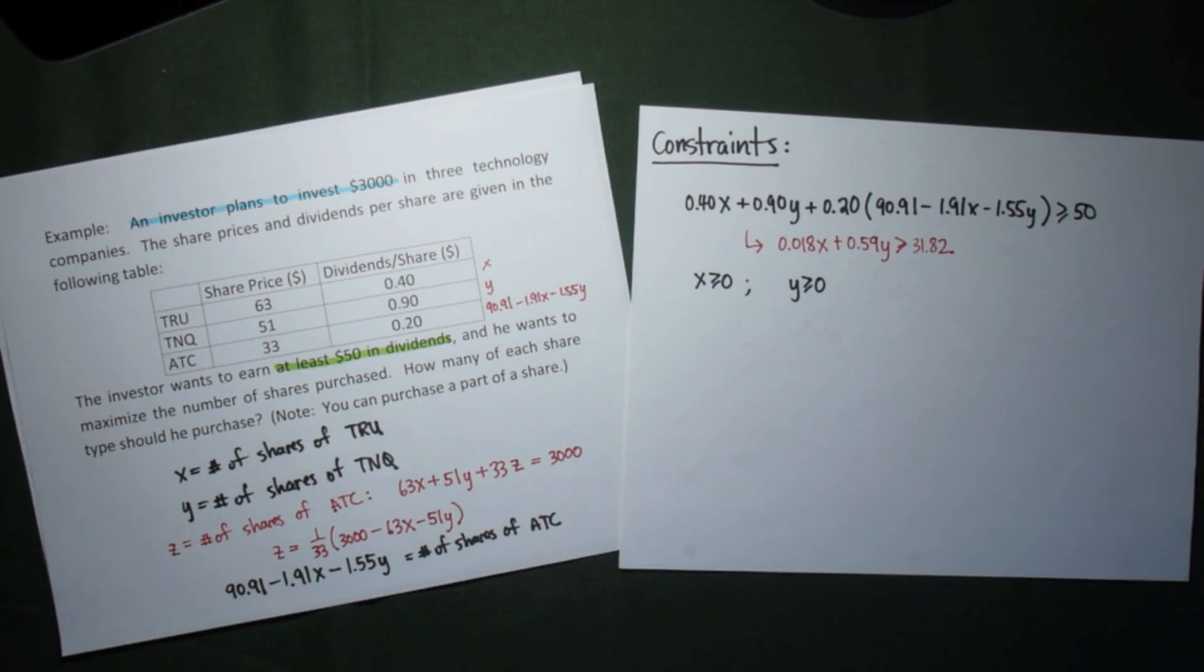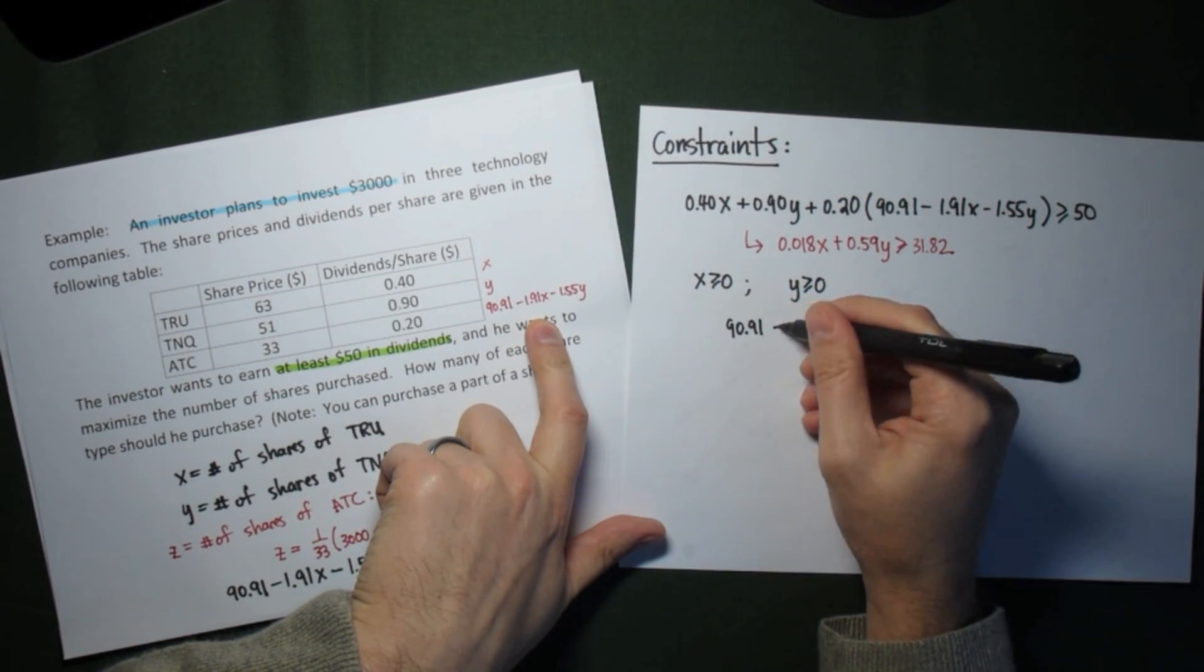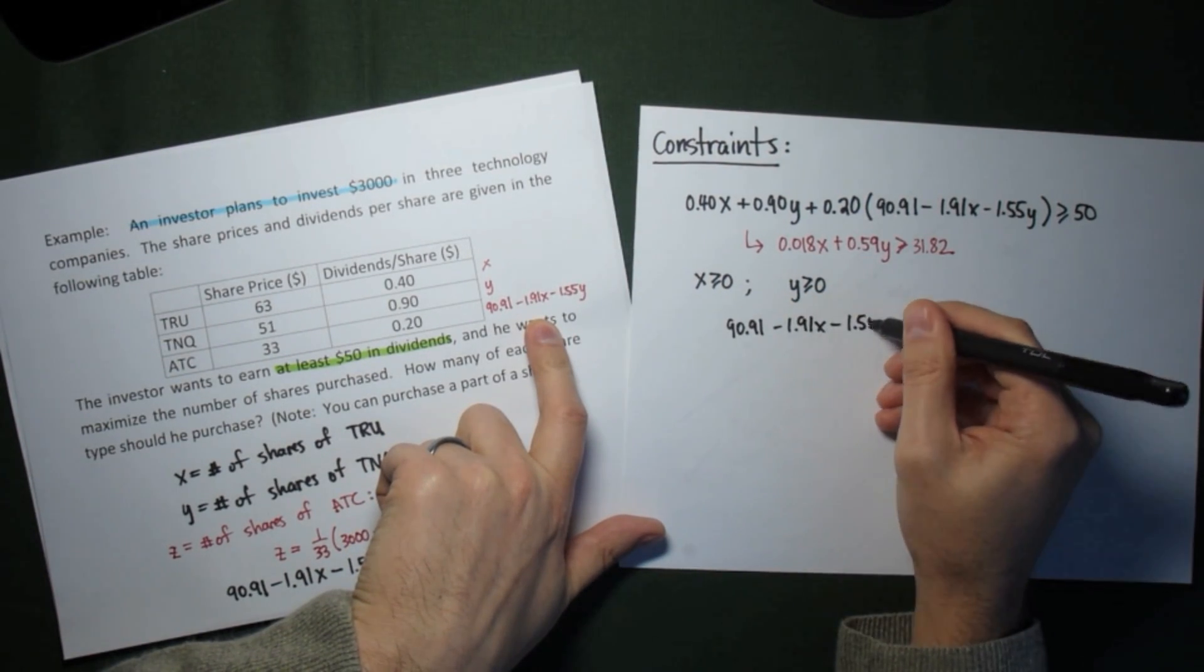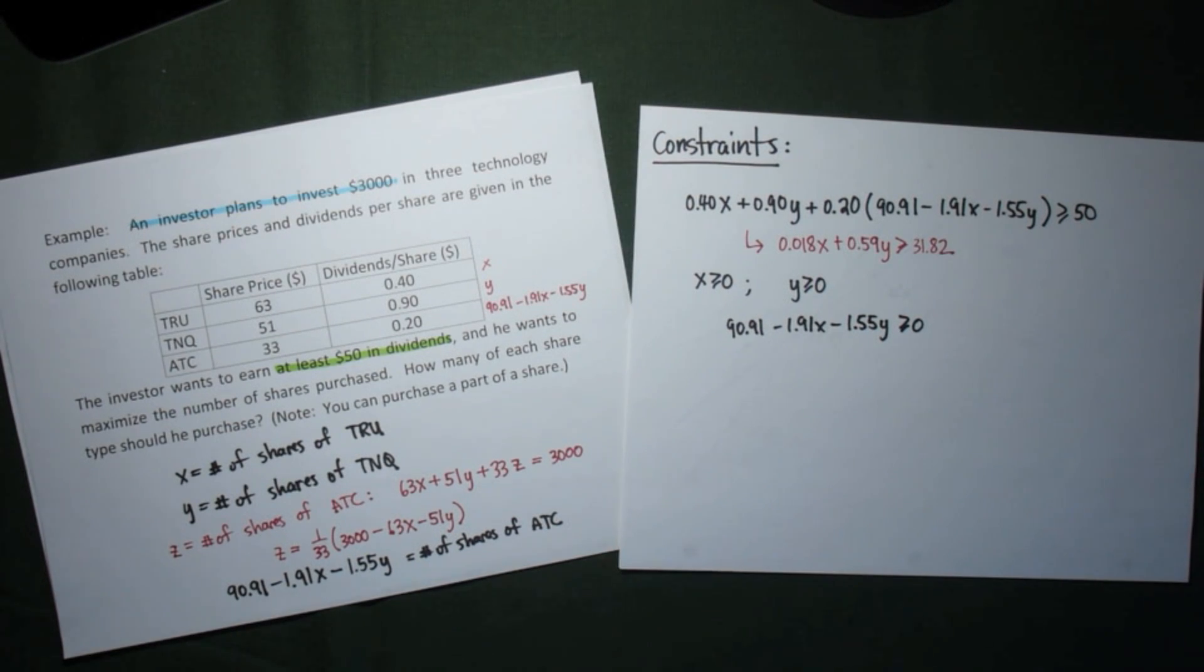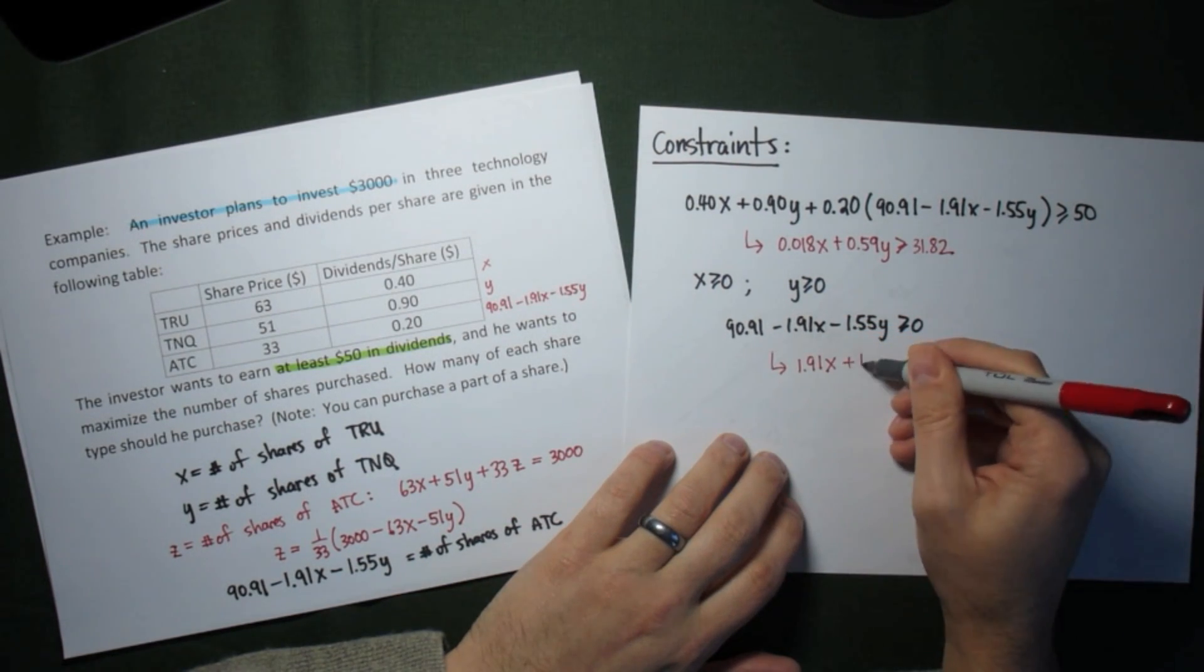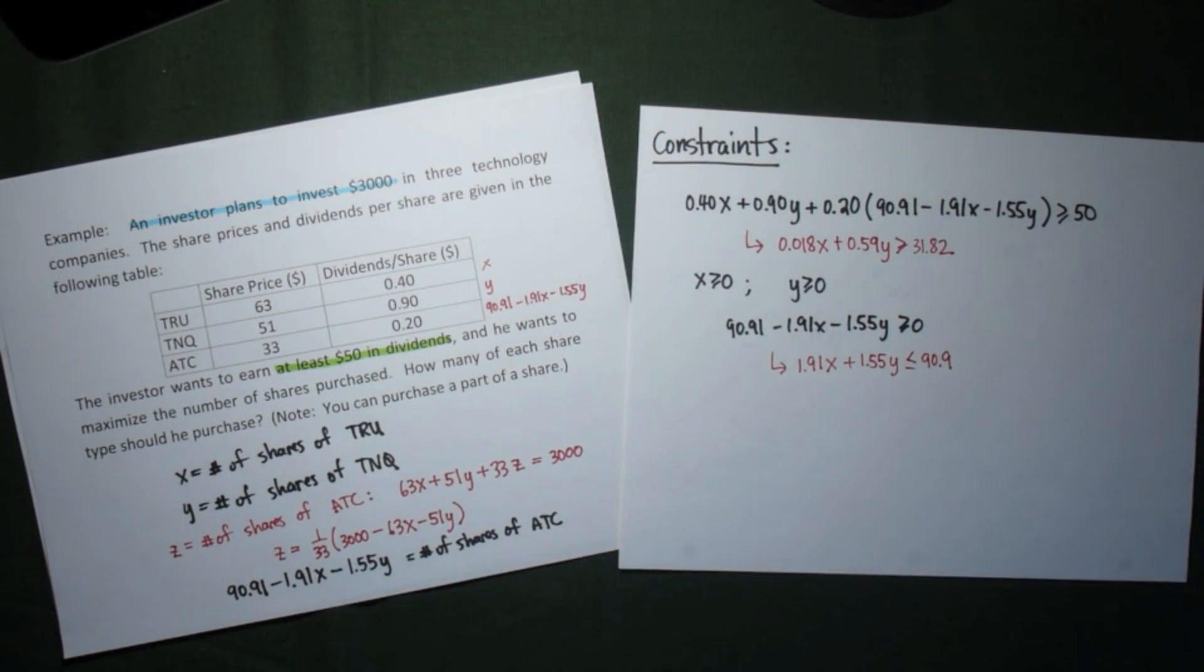Finally, there's the positivity constraints. x is positive, y is positive, and z also has to be positive. Again, using the entire expression for z. We simplify this a little bit. It's not really simplified much, but we take the x's and y's to the same side, move the number to the other.